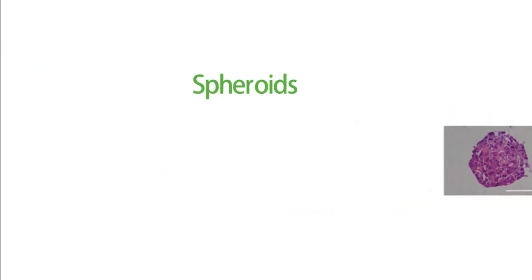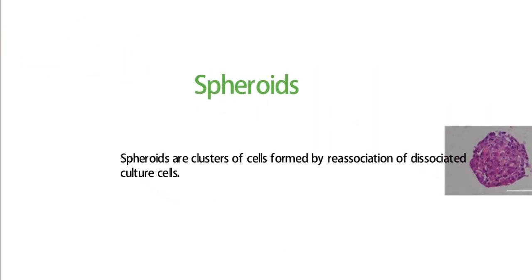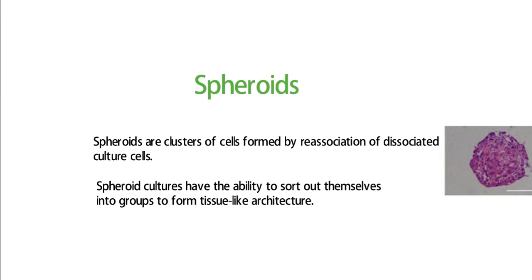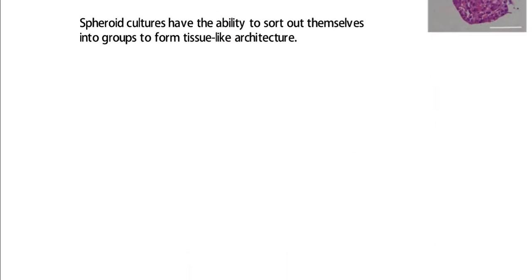Coming to three-dimensional cultures in histotypic culture, it constitutes spheroids. Spheroids are clusters of cells formed by reassociation of dissociated culture cells. Spheroids have the ability to sort out themselves into groups to form tissue-like architecture. The basic principle of using spheroids in histotypic culture is that the cells in heterotypic or homotypic aggregates are capable of sorting themselves out.